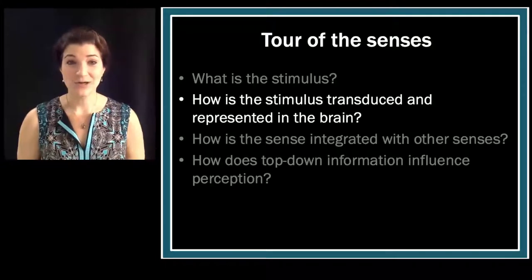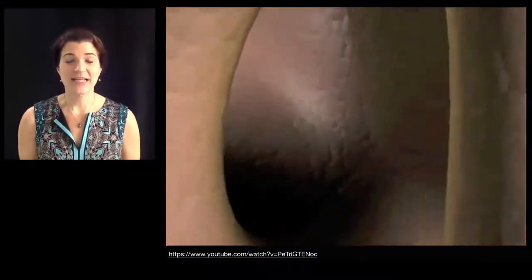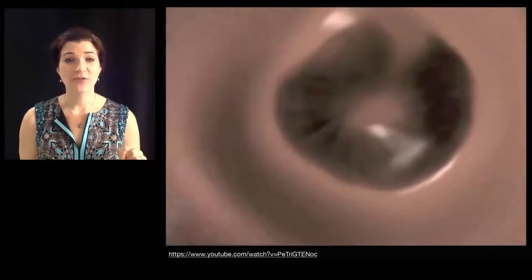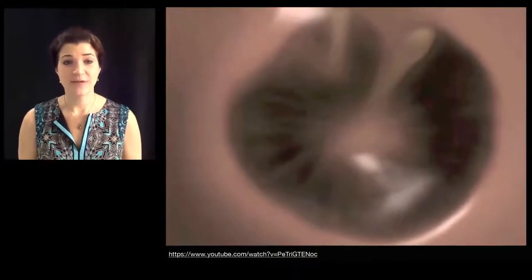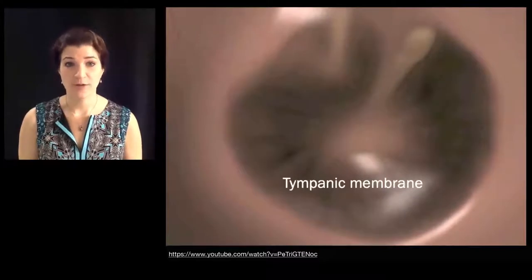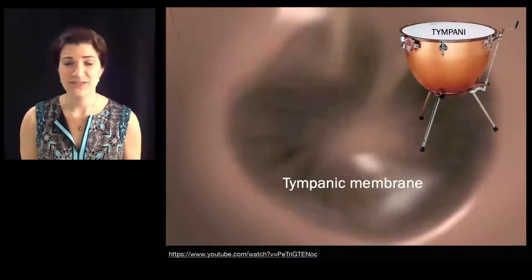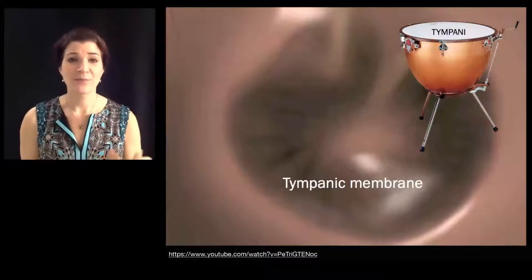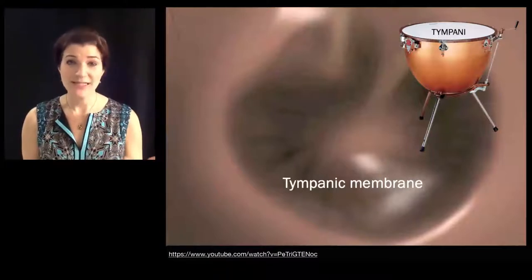Our journey begins, of course, with an ear. The process of transduction begins when sound waves enter the ear and travel through the external auditory canal until they hit the tympanic membrane, or eardrum. There's a big drum called a tympani, and the tympanic membrane is a lot like the surface of that drum — a very thin membrane stretched tightly across the surface. When sound waves contact the tympanic membrane, they cause it to move, to vibrate.